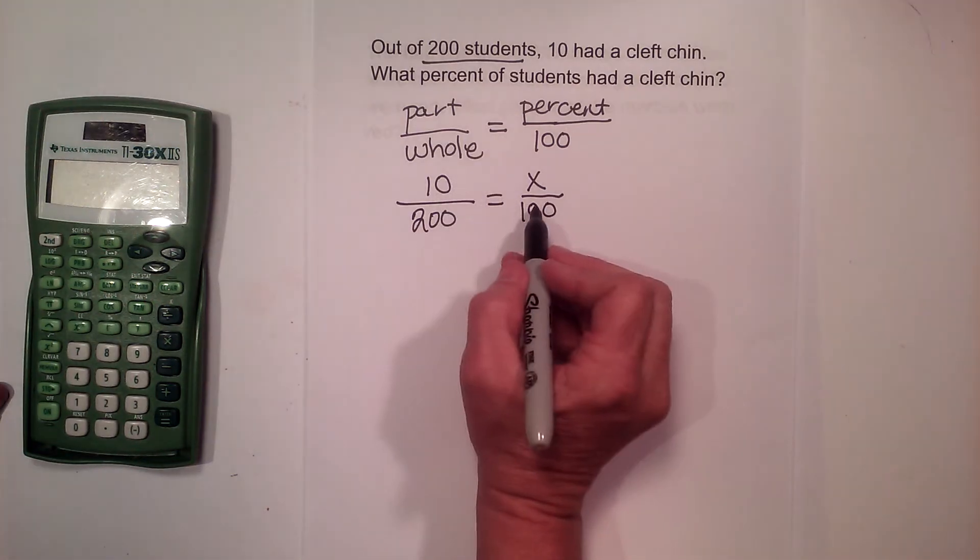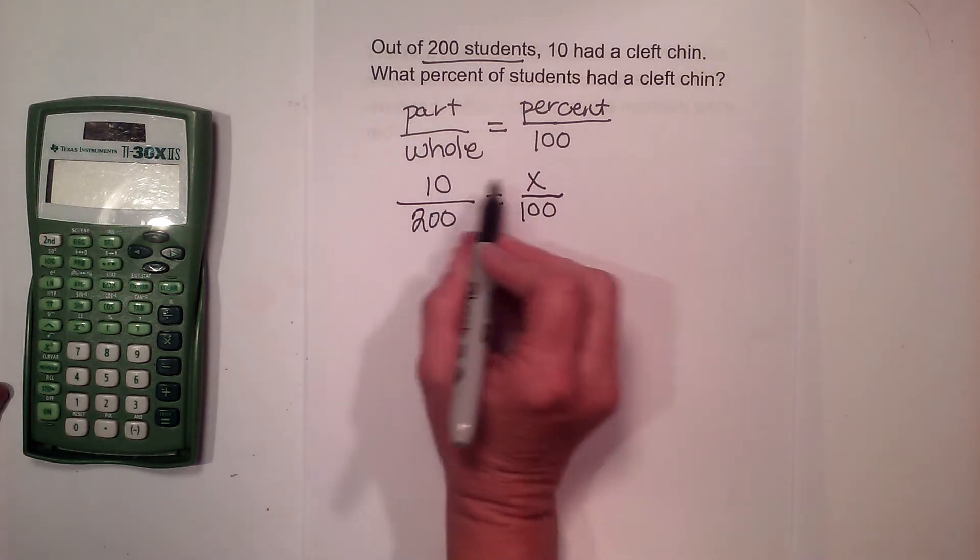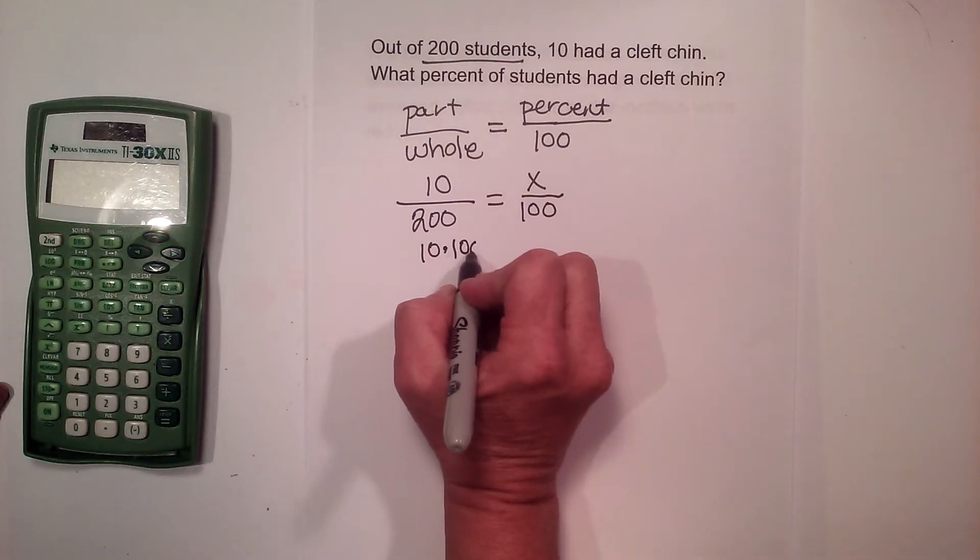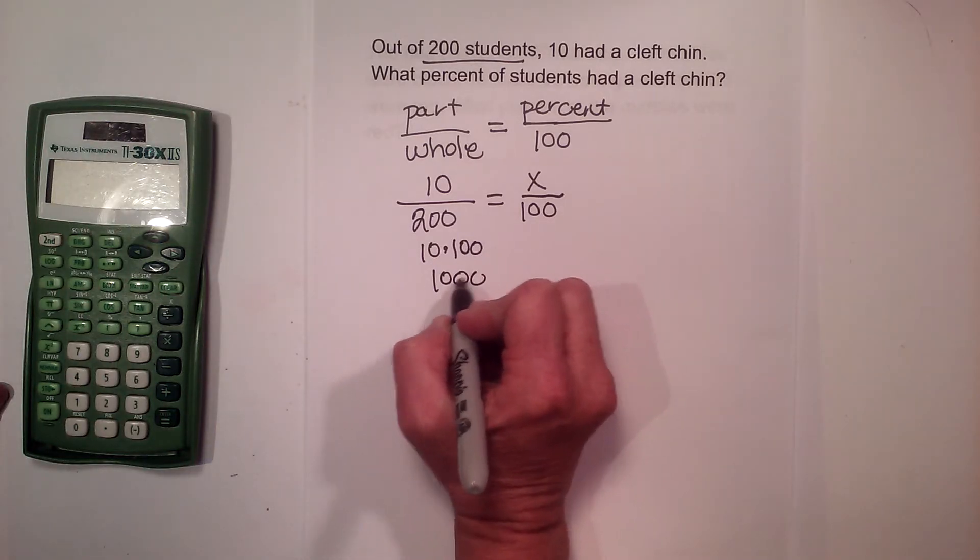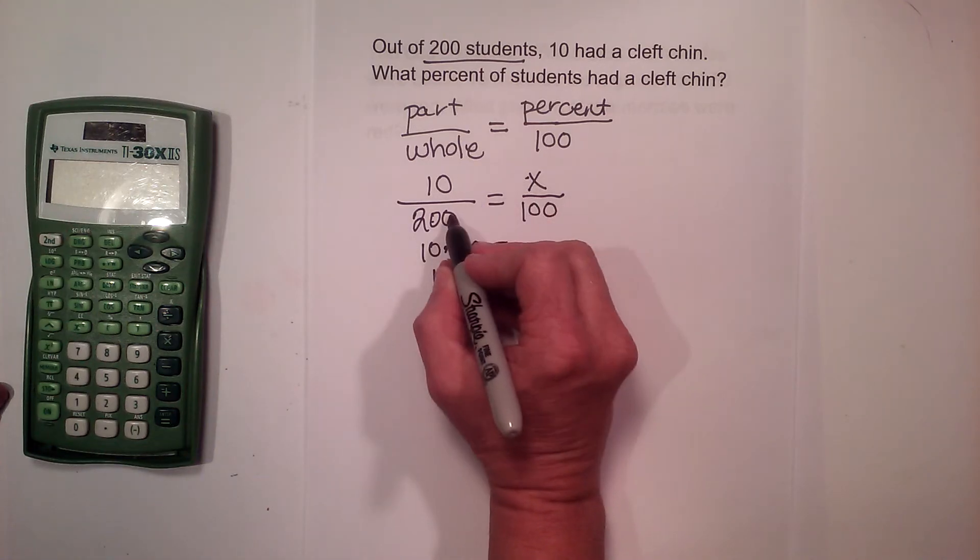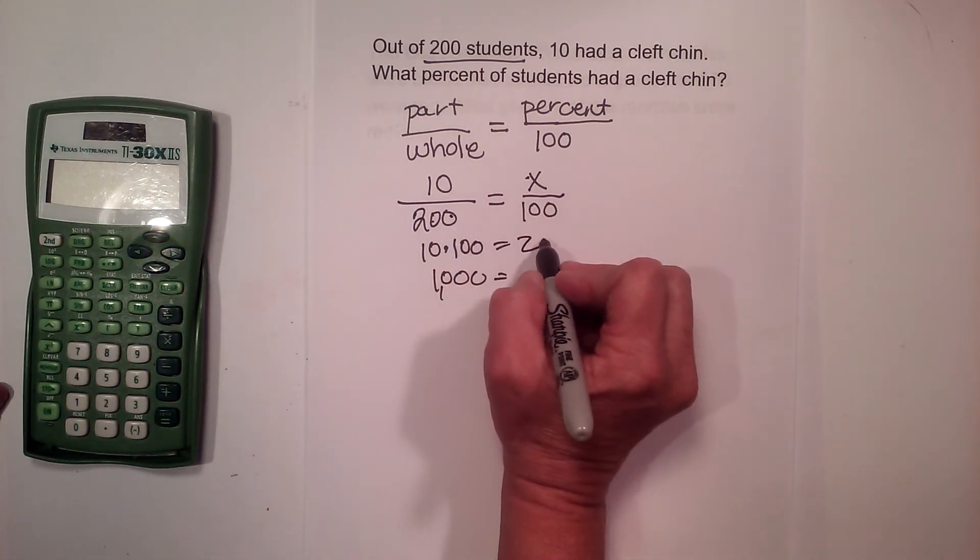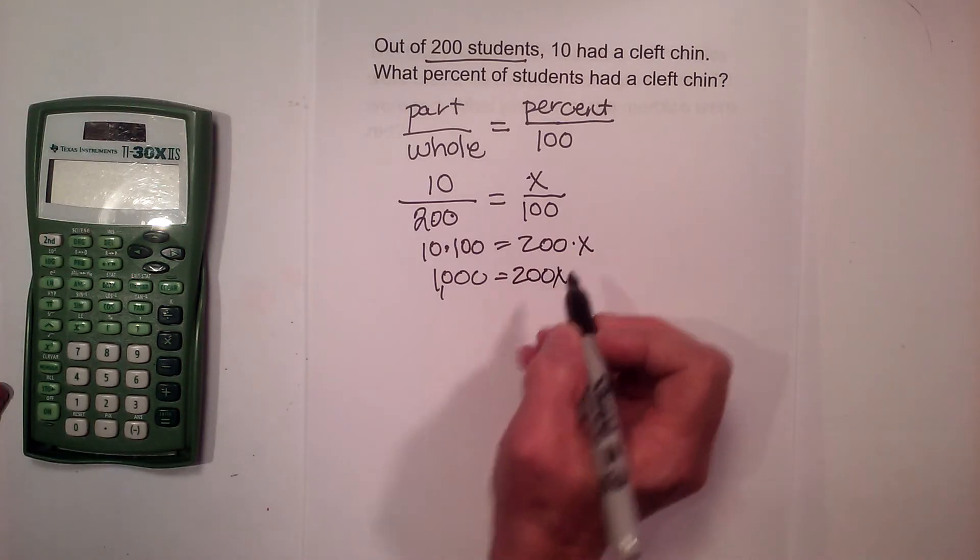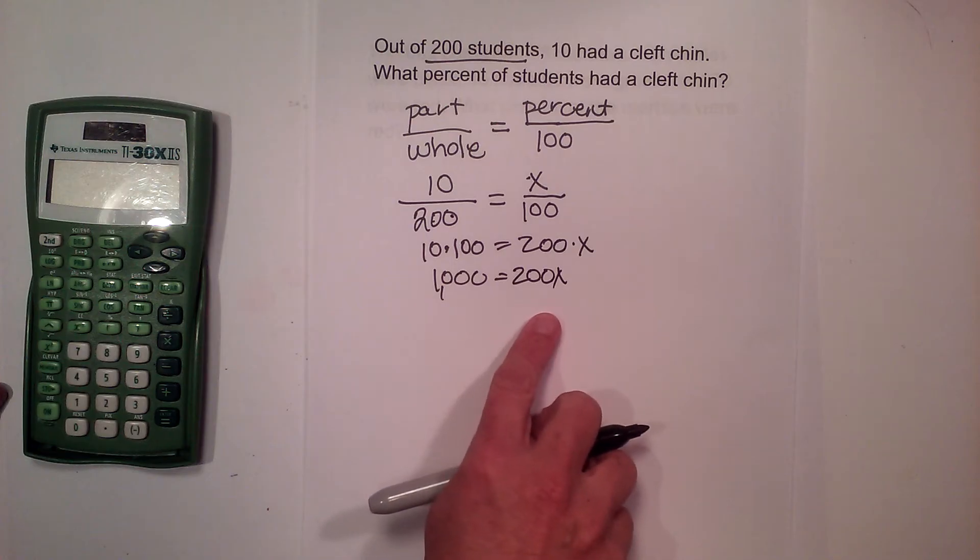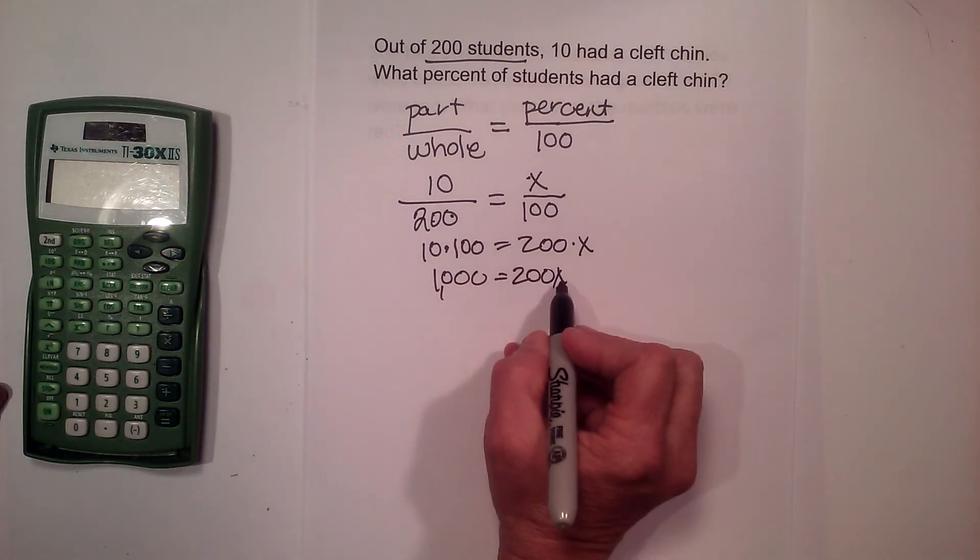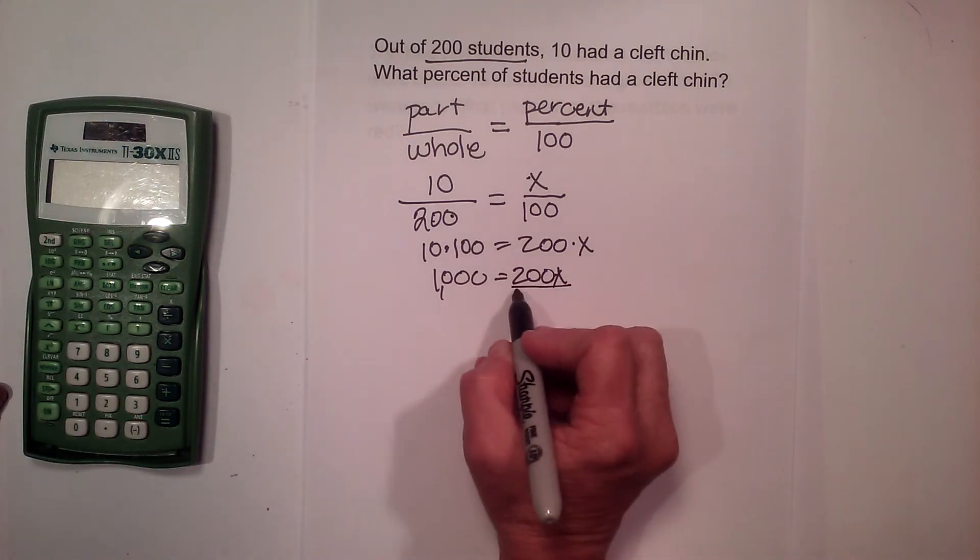Now let's cross multiply. So we have 10 times 100. Well that gives us 1000, and that's going to equal the other cross product which is 200 times x or just 200x. Now to solve for x we have to say 200 times what gives us 1000, or we can just divide because this is multiplication. The inverse is to divide.